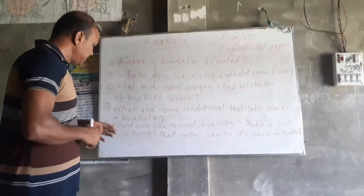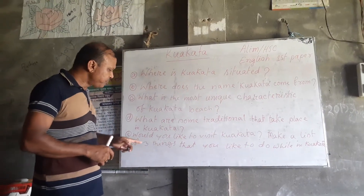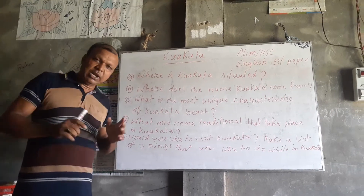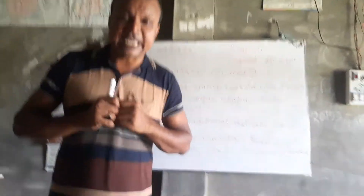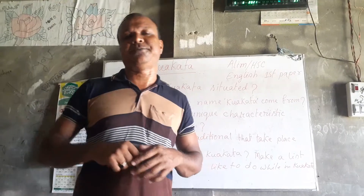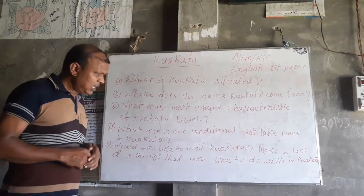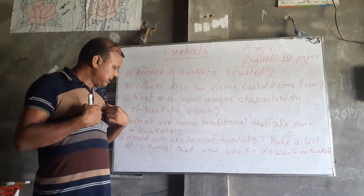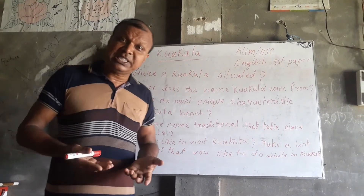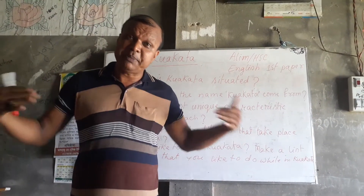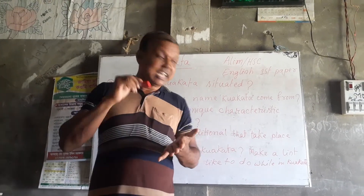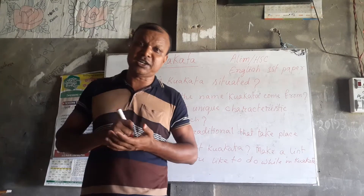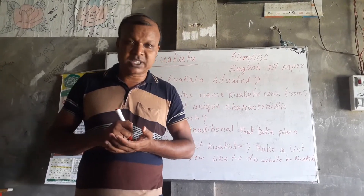The last question: Would you like to visit Kuwakata? If you like to visit, make a list of three things. You can answer in this way: I would like to visit Kuwakata. If I visit Kuwakata, I will first visit the hundred-year-old Buddhist temples.